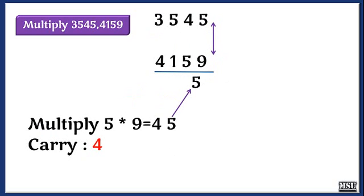We will discuss another example: 3545 into 4159. So 5 into 9, we will get the result 45.